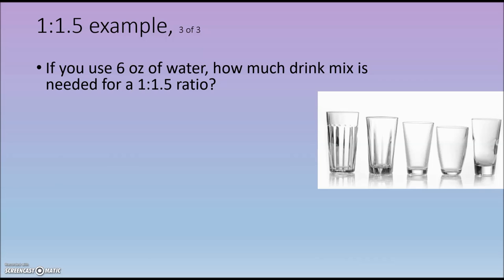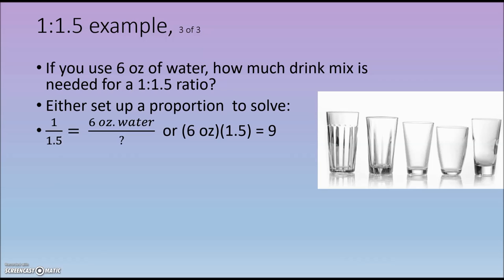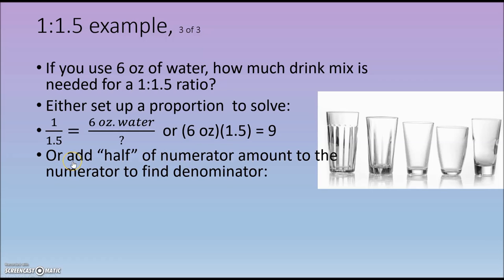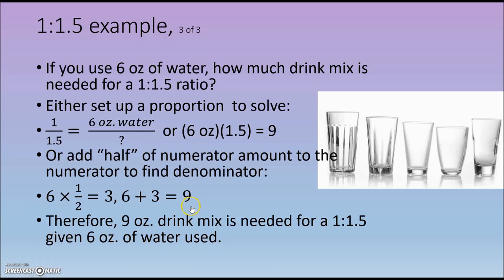What if we want 6 ounces of water? How much drink mix is needed? Using the proportion method, we multiply both the numerator and denominator by 6. So 6 times 1.5 gives us 9 ounces of drink mix. Alternatively, using the halving method: half of 6 is 3, added to 6 gives us 9 — that's the one part plus the half part, giving us 9 ounces of drink mix when using 6 ounces of water.